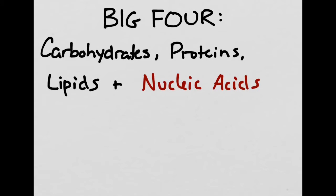You may remember from fall term that there are four major kinds of biological molecules, which we call the big four. The big four are carbohydrates, proteins, lipids, and nucleic acids. All of these are what we call macromolecules, meaning that they are made up of smaller subunits.